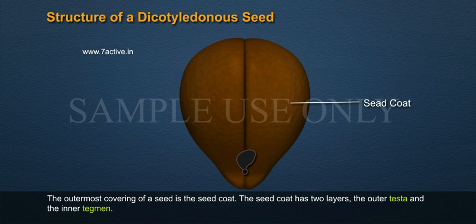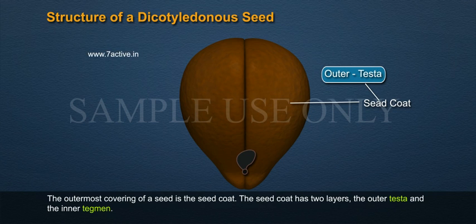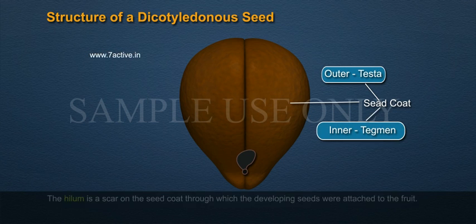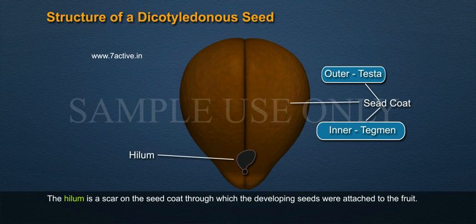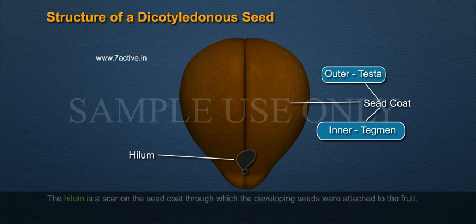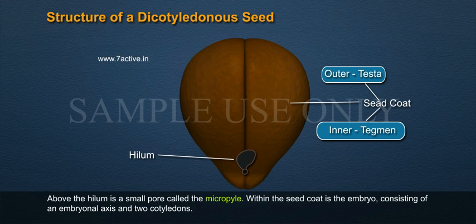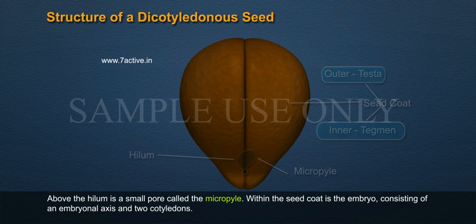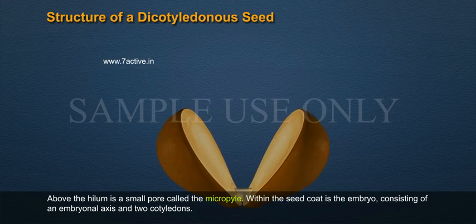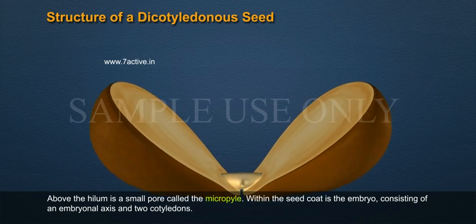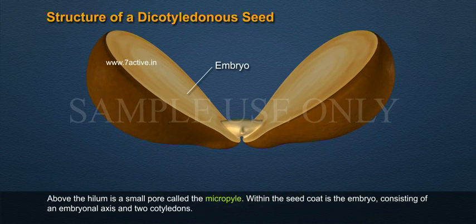The outermost covering of a seed is the seed coat. The seed coat has two layers: the outer testa and the inner tegmen. A hilum is a scar on the seed coat through which the developing seeds were attached to the fruit.